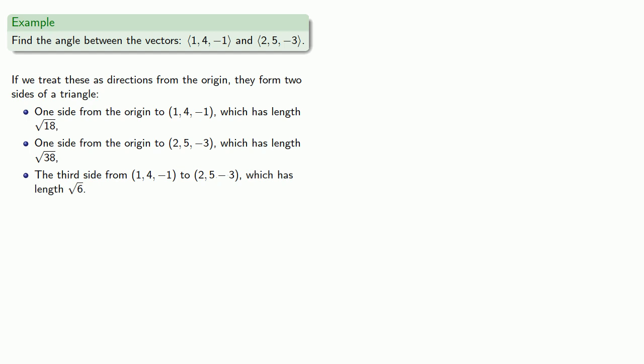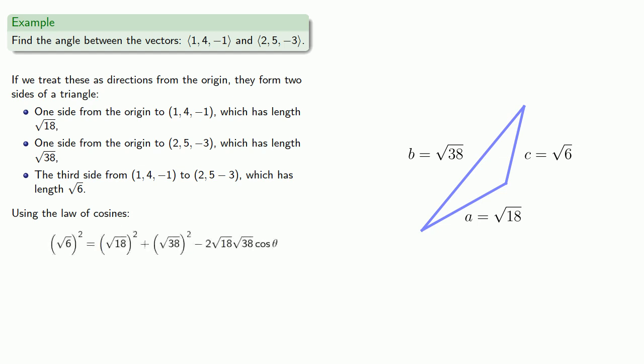Again, we have three sides of a triangle and want to find the angle between two of the sides. So we use the law of cosines to find the angle.